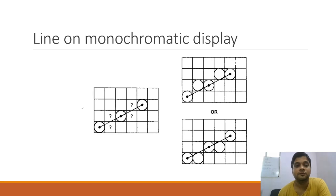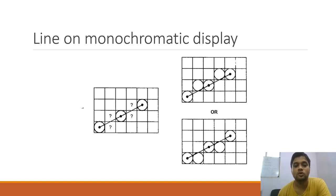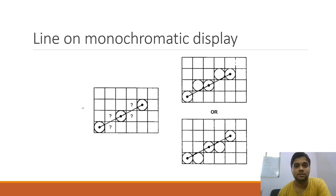A horizontal line has slope 0, a vertical line has slope infinity, and a 45-degree line has slope 1. If my line has any other slope value other than these three, it is a challenge to display that line effectively on a low resolution display device. For example, if I have to display a line from 1,1 to 5,3, that is the challenge.